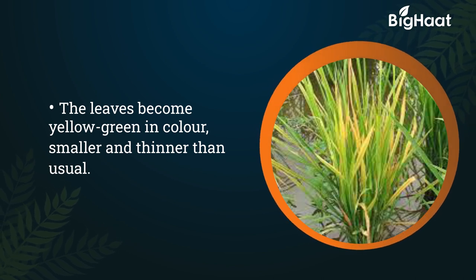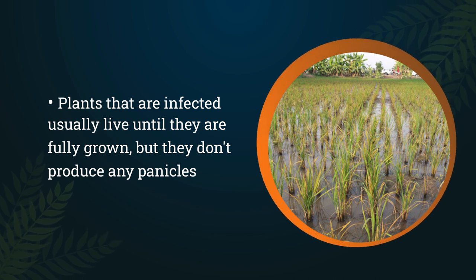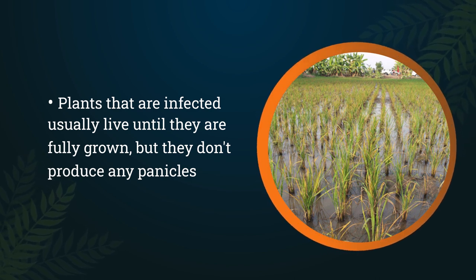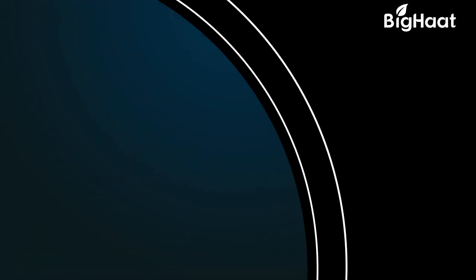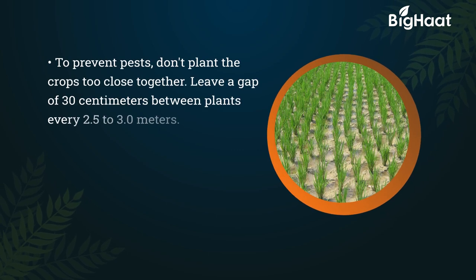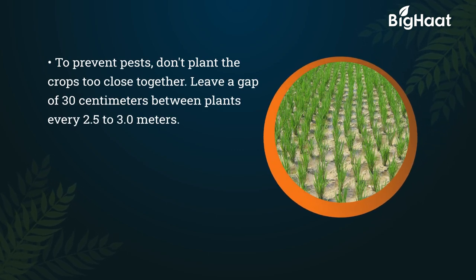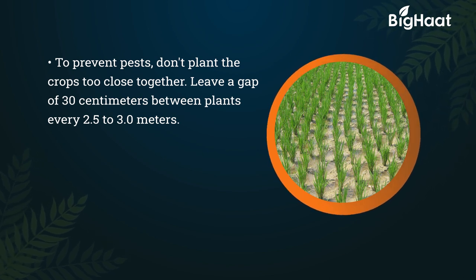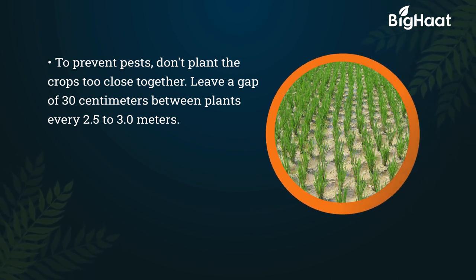Plants that are infected usually live until they are fully grown but they don't produce any panicles. To prevent the pest, don't plant the crops too close together — leave a gap of 30 centimeters between plants every 2.5 to 3 meters.